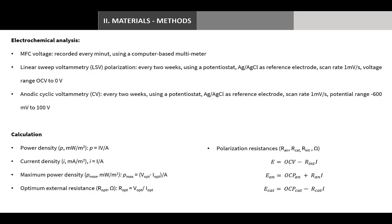Measurements of linear sweep voltammetry polarization test and anodic cyclic voltammetry were performed using a potentiostat every two weeks of operation — at the third, fifth, seventh, ninth, eleventh, thirteenth, fifteenth, and seventeenth weeks. Power, current, and resistance data were measured and calculated. To investigate the effect of explanatory variables on the responses of interest, simple and multiple linear models were considered.